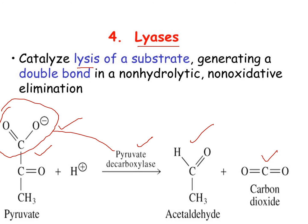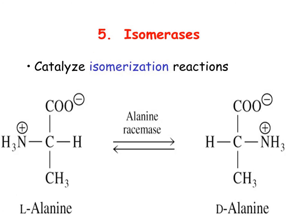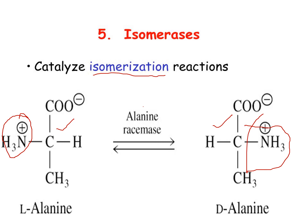The fifth class is isomerases — enzymes that catalyze isomerization reactions. In the example, L-alanine and D-alanine have the same molecular formula, but differ in the spatial position of the amino group: in L-alanine it is on the left (levorotatory), and in D-alanine it is on the right (dextrorotatory). The enzyme alanine racemase interconverts L-alanine and D-alanine, forming a racemic mixture.